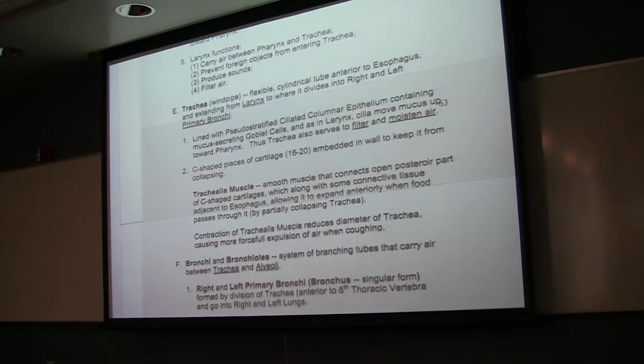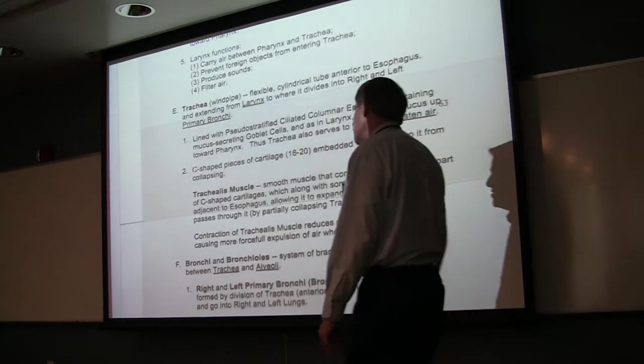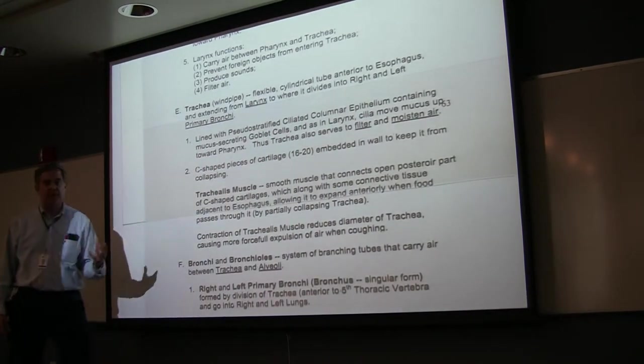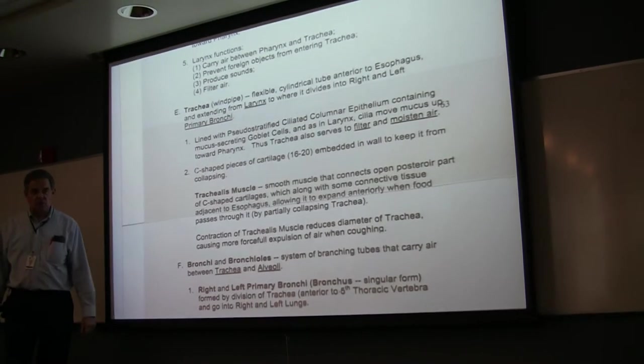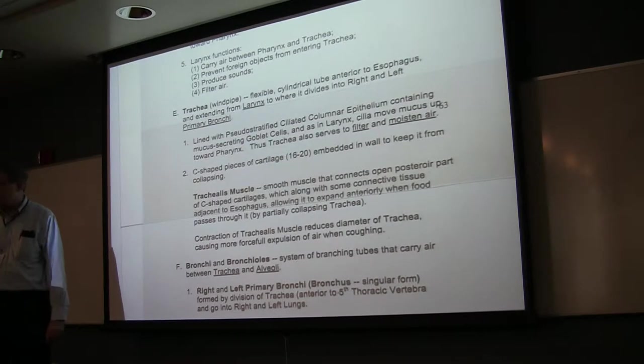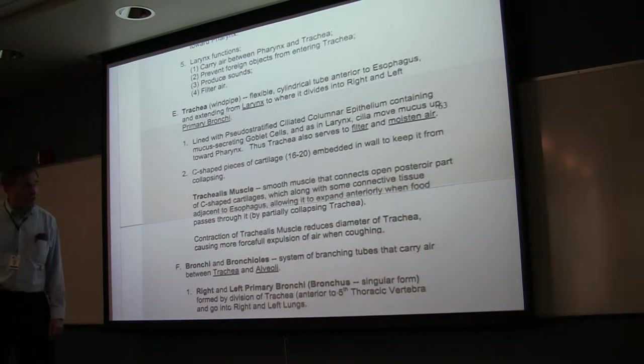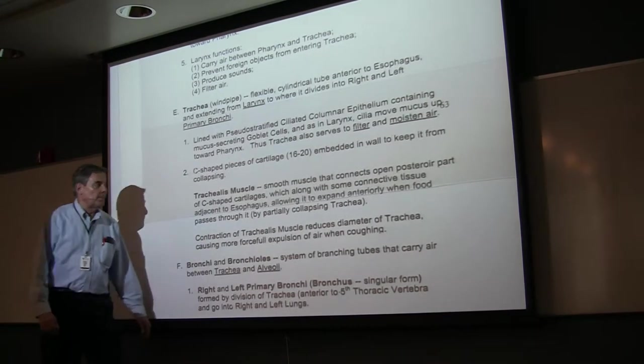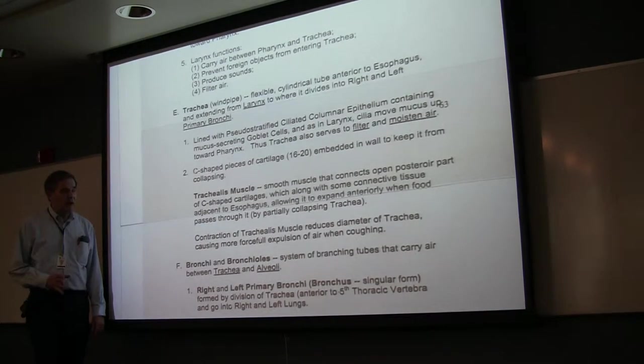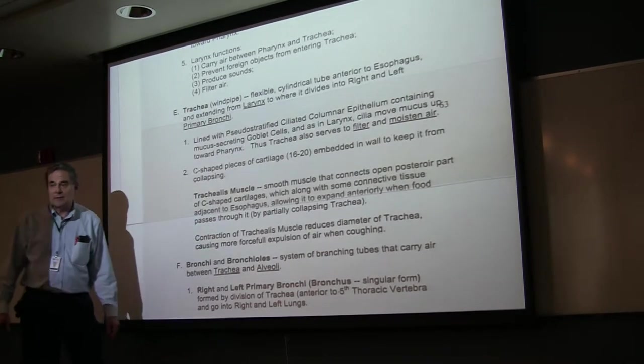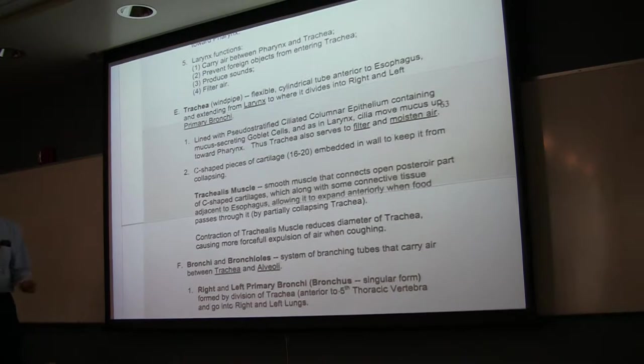As you saw in lab from the models, it is supported by C-shaped pieces of cartilage, which are bent and bowed for the same purpose—to keep the tube from collapsing. But the posterior aspect between the open ends of the C-shaped piece of cartilage is a muscle, and this is called the trachealis muscle. When it contracts, it basically reduces the diameter of the trachea, which causes a more forceful expulsion of air.